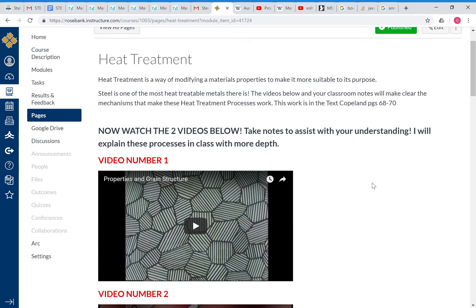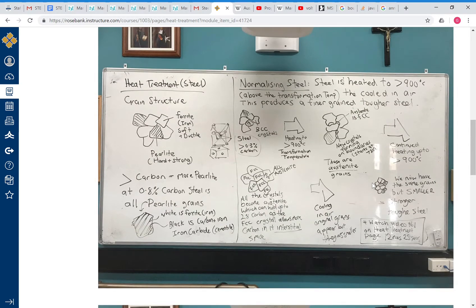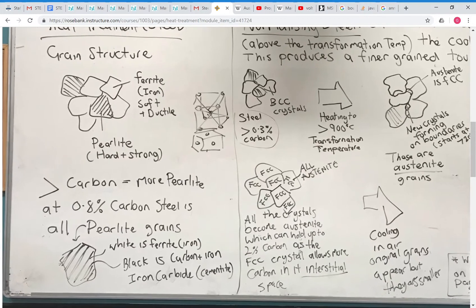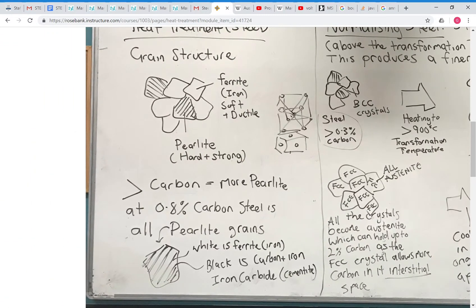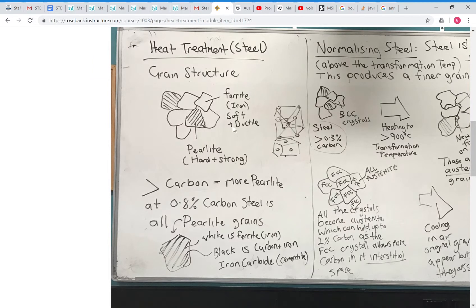If we scan down, this is the first stuff we covered on the board. Under the title of Heat Treatment of Steel, we were looking at the grain structure — and we did this when we were talking about cold working as well. You can see in this grain structure here you've got ferrite, which is a soft and ductile element of steel.